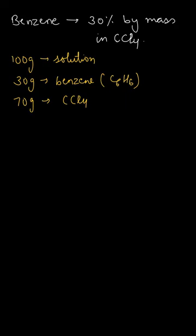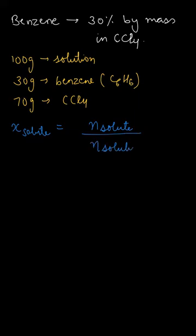Here benzene is our solute. We know that the mole fraction is denoted by X. So the mole fraction of solute is given by the number of moles of solute divided by the number of moles of the solution, which involves the number of moles of solute plus the number of moles of the solvent.